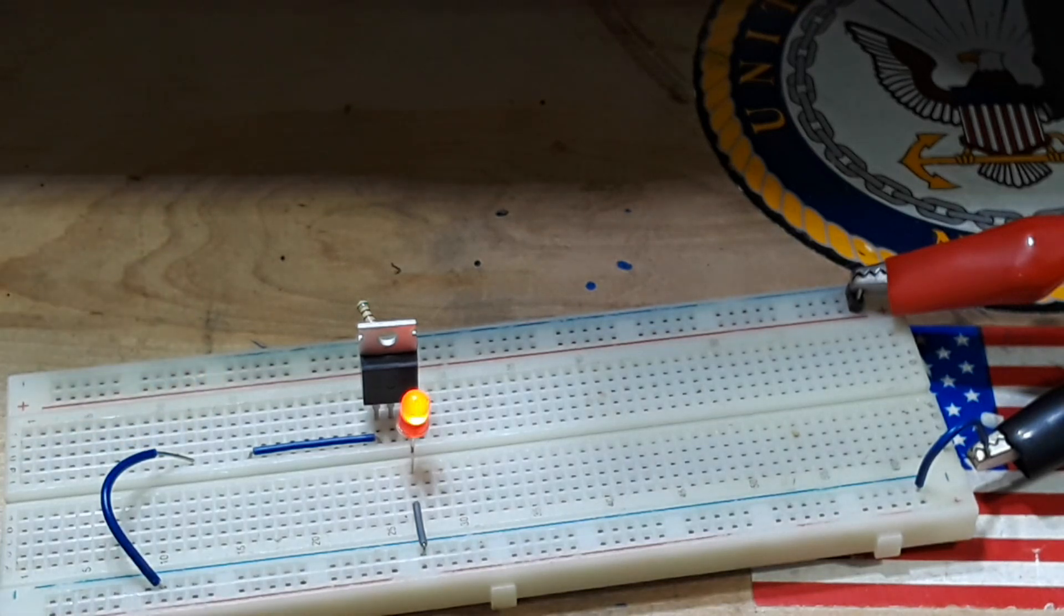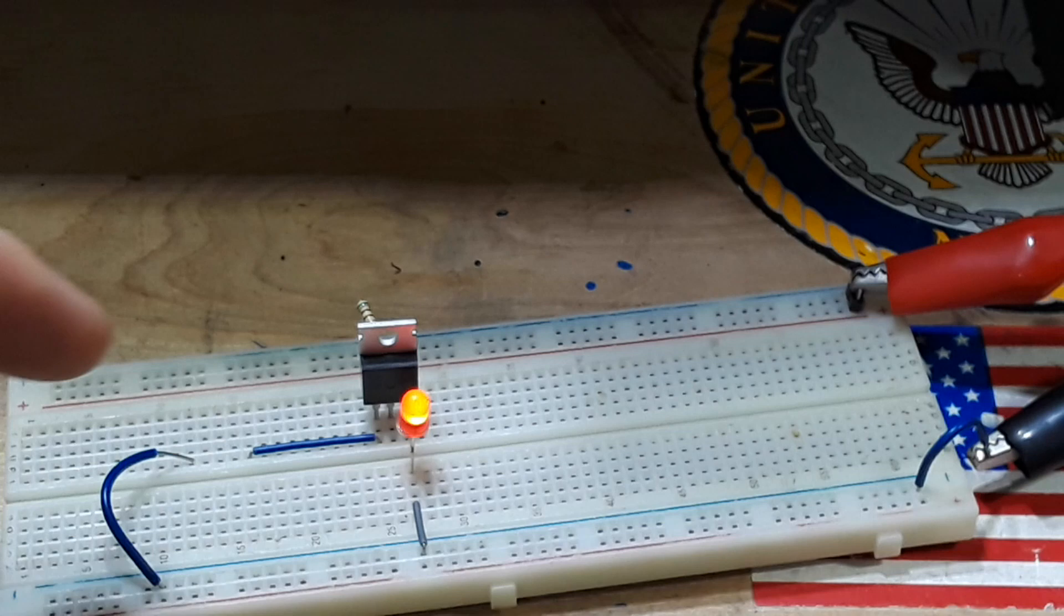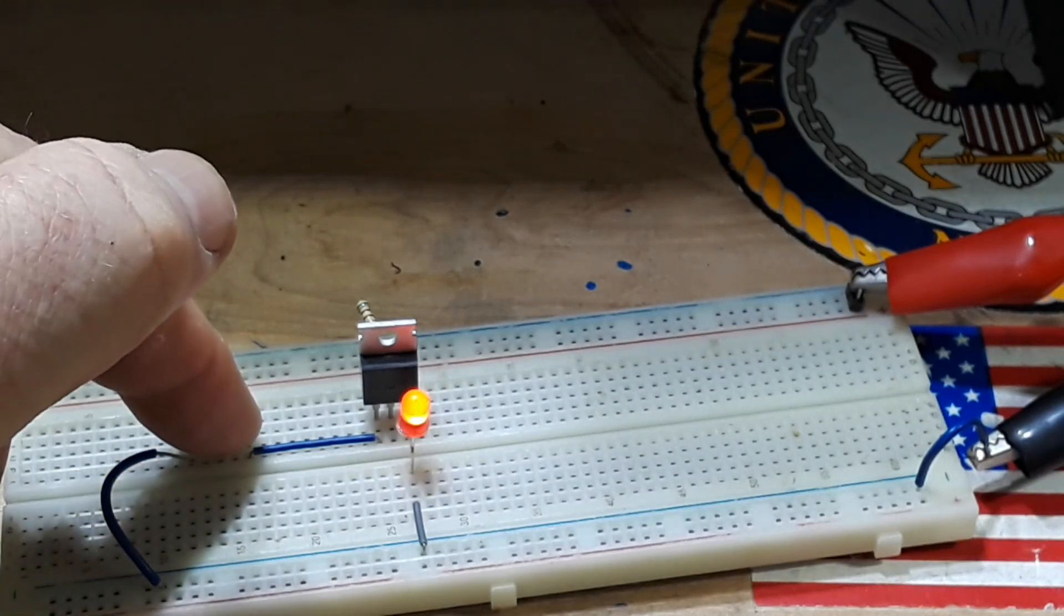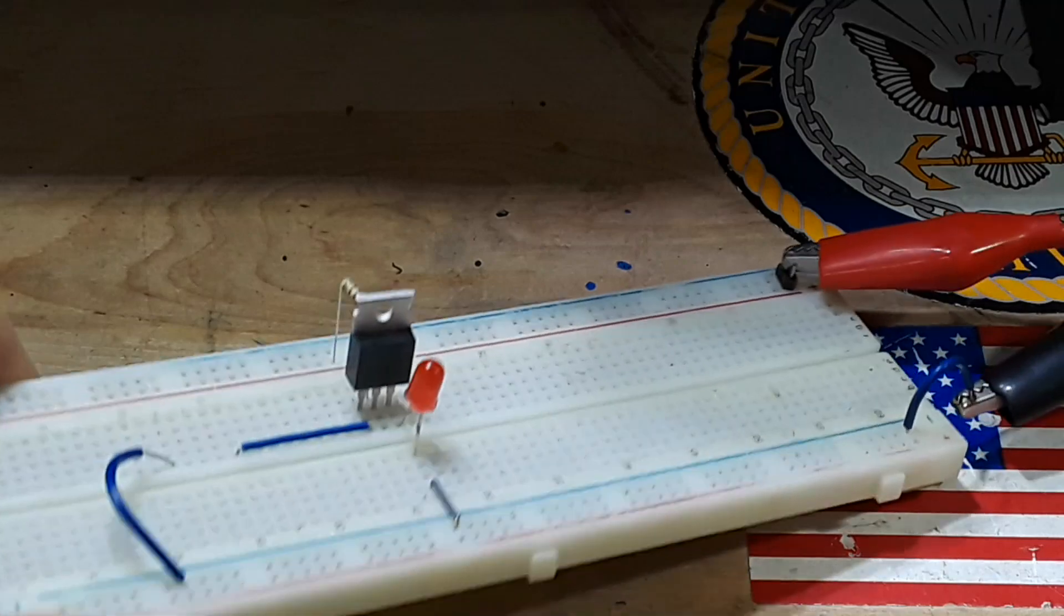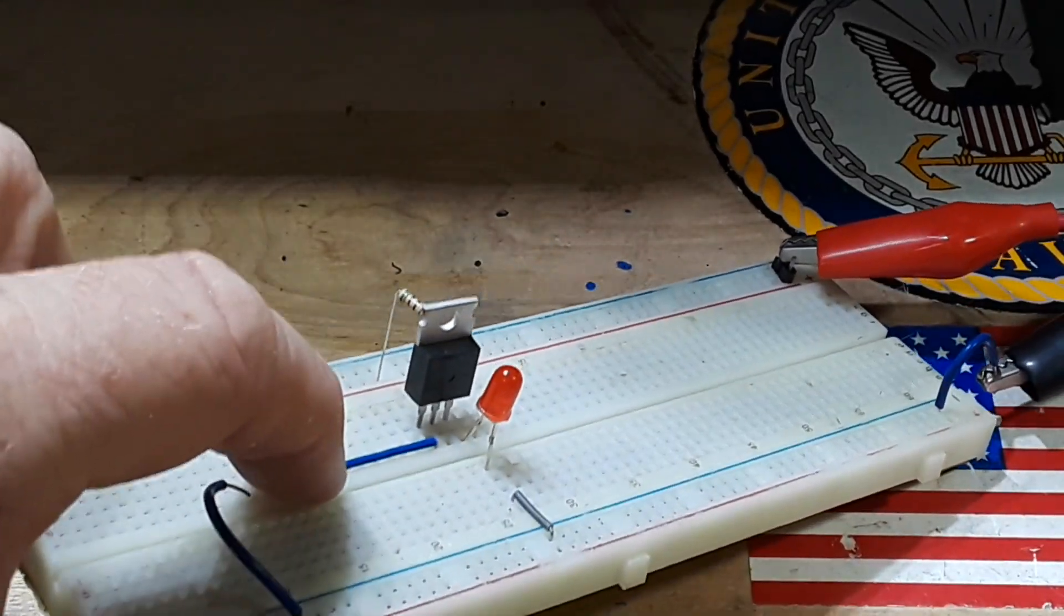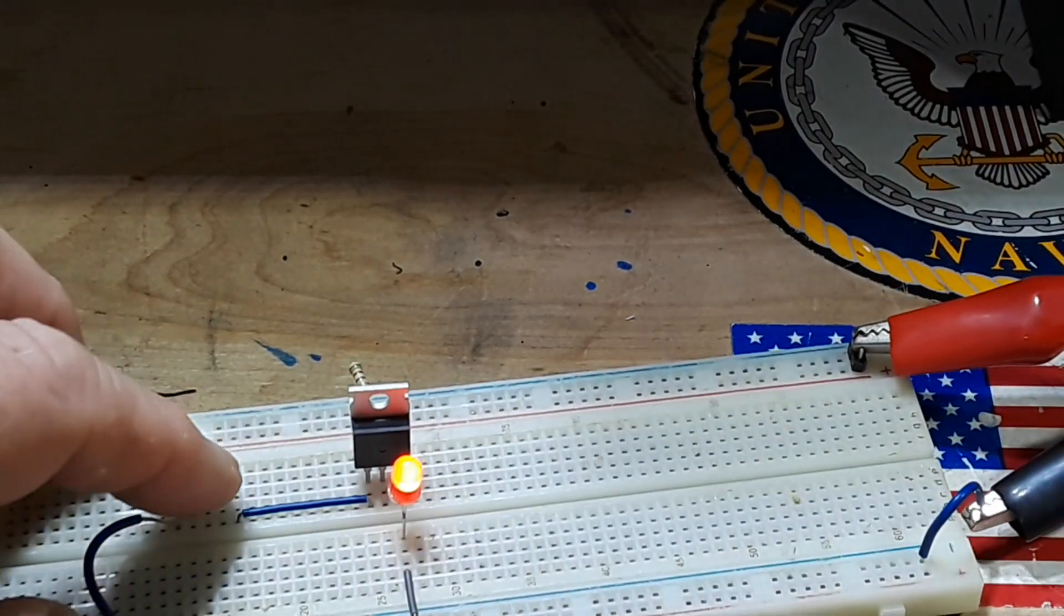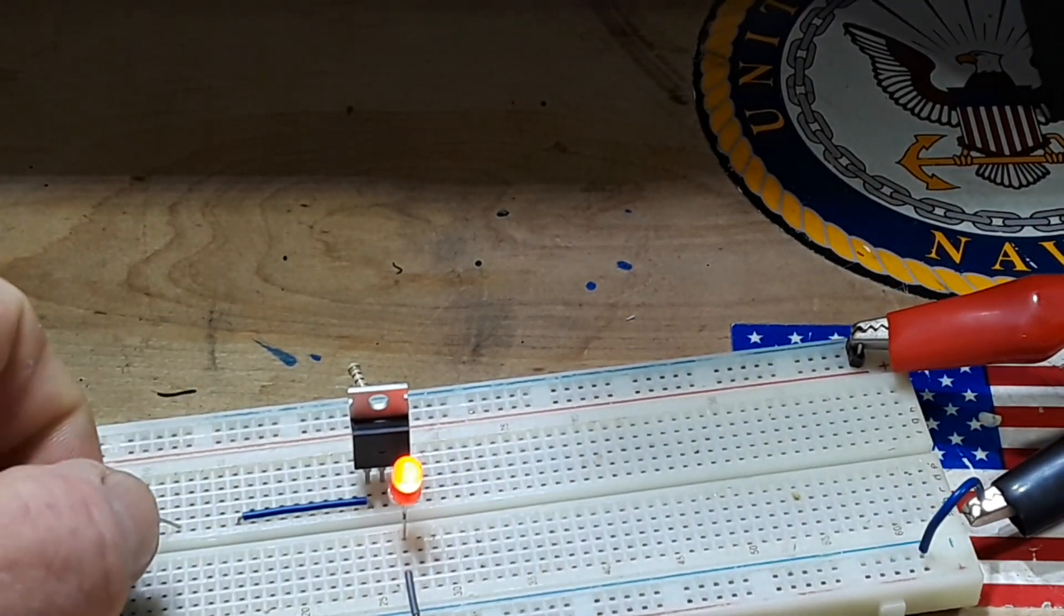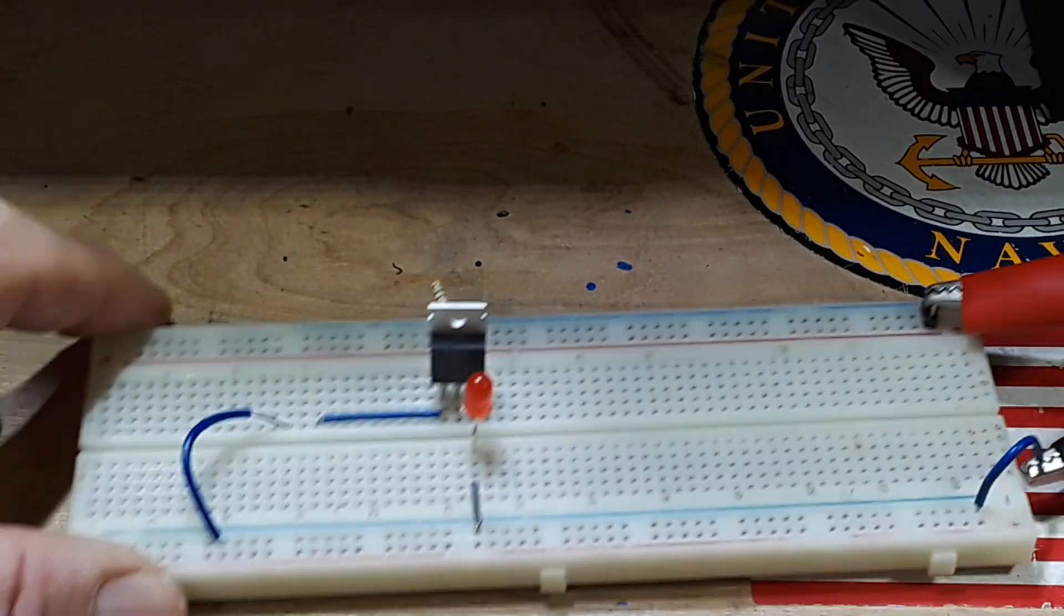And because it's isolated, that charge will remain there until there's somewhere for it to go, in which case I can simply use my finger again to bridge these two points and you can see the LED is out. Very simple, on and off. The simplest capacitive touch switch in existence.